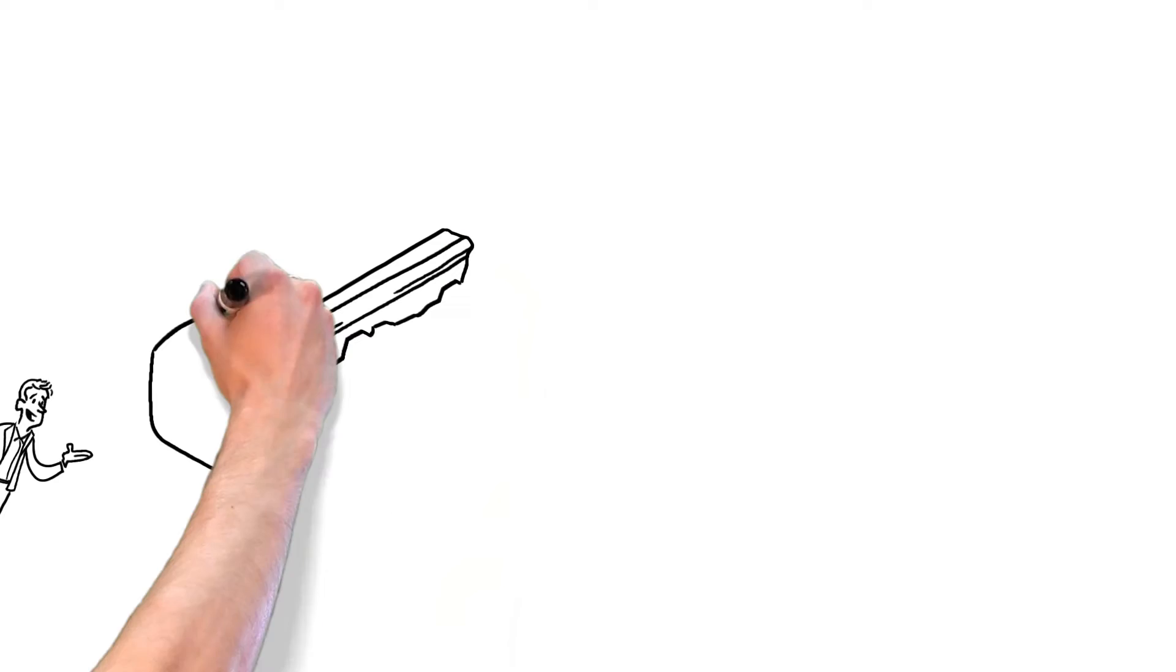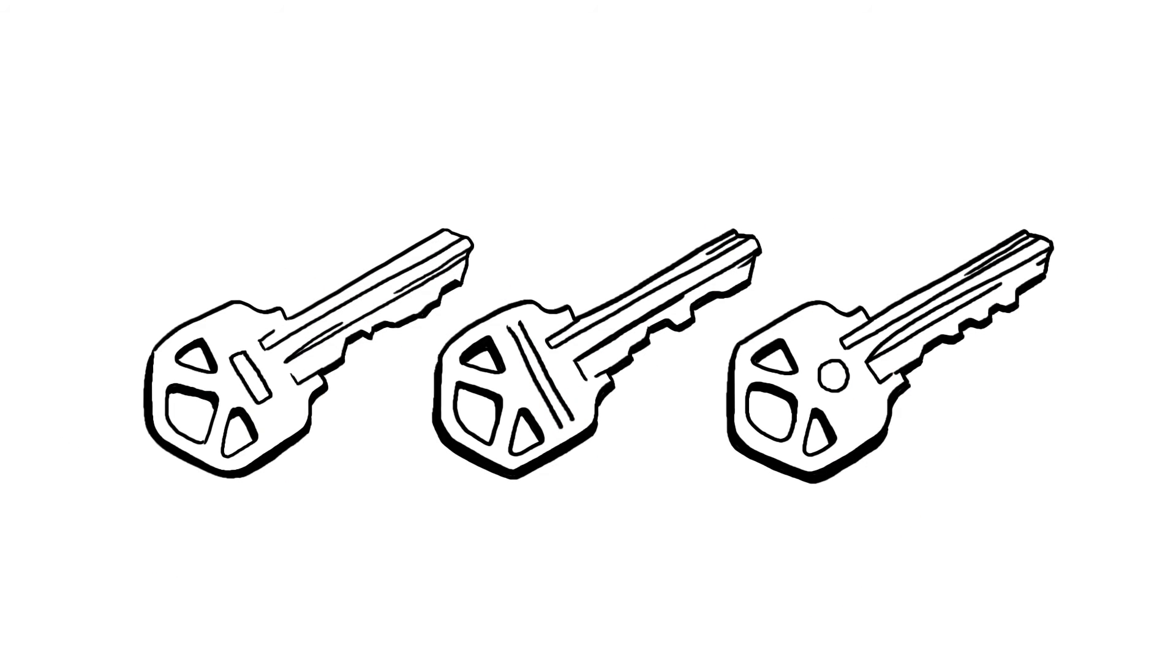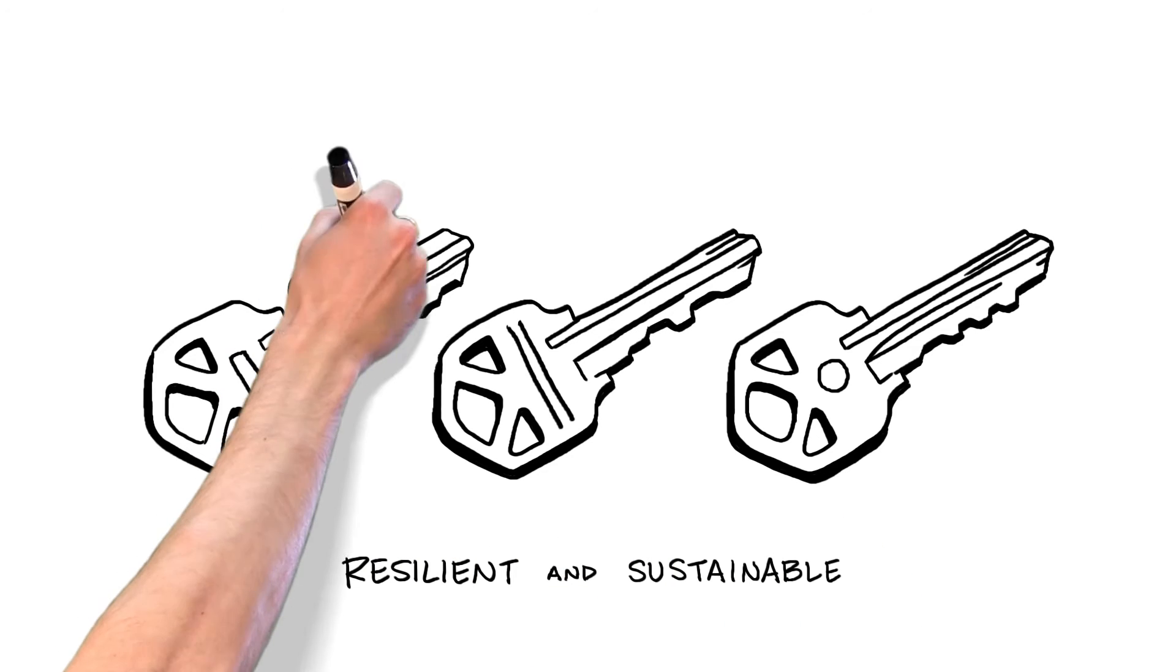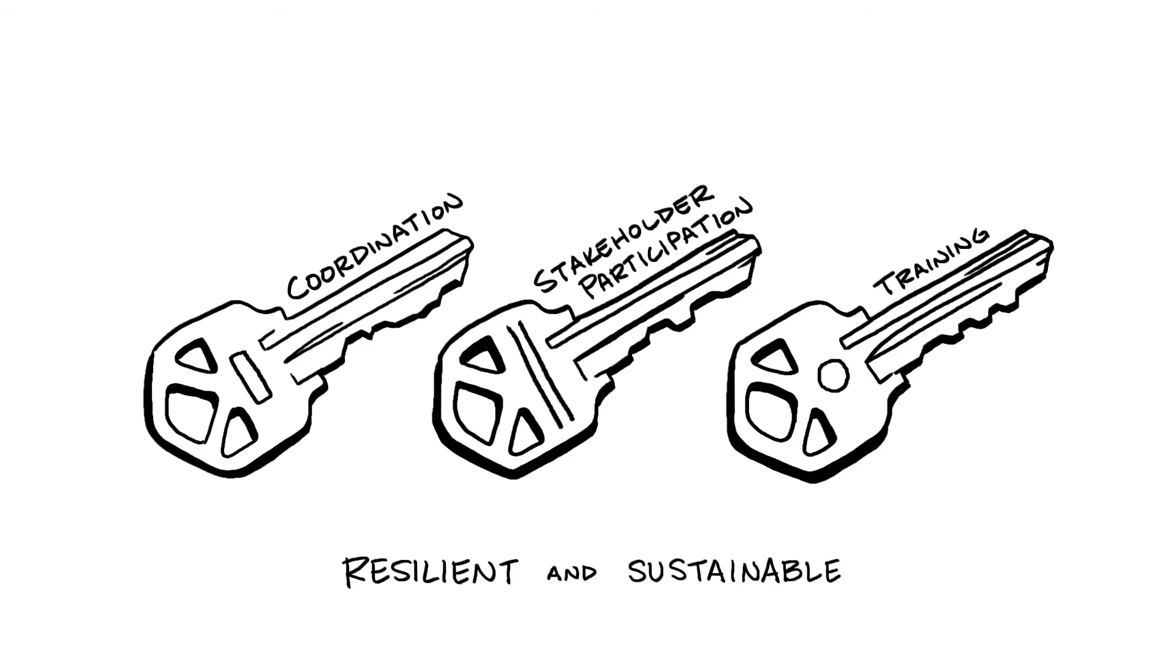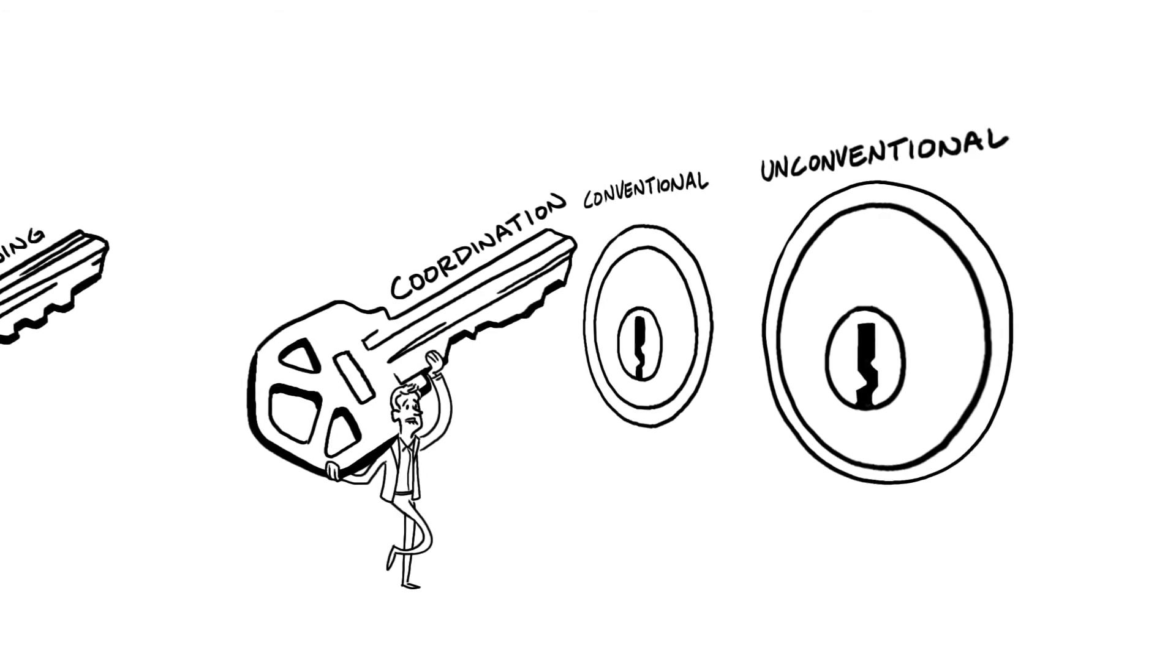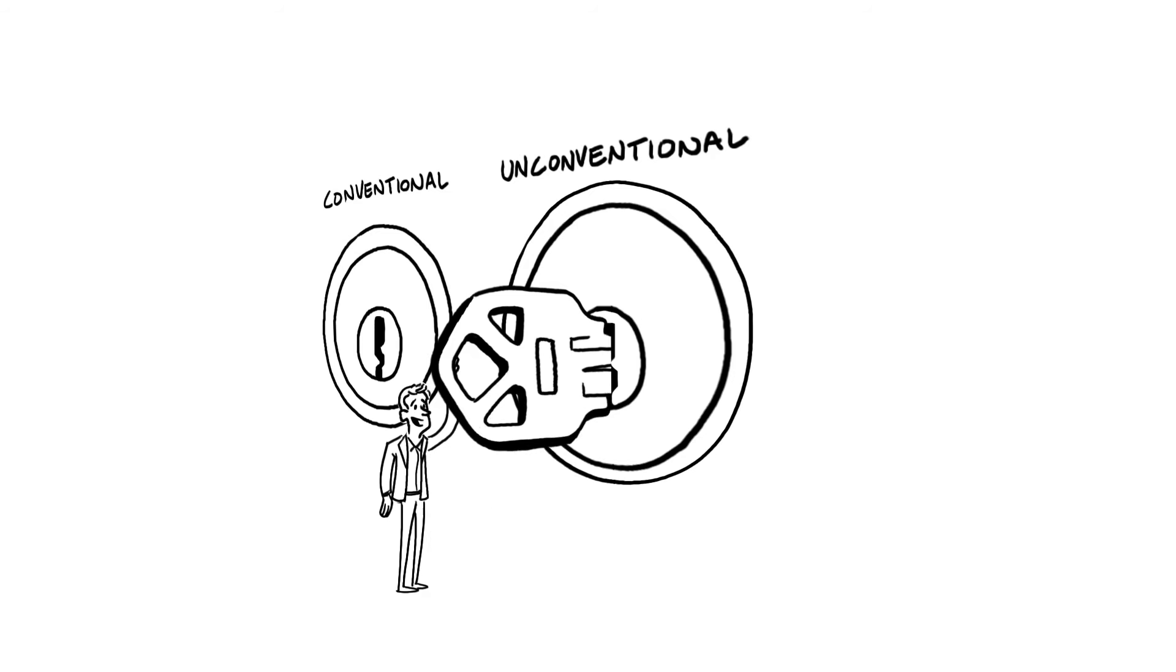Thankfully, our research also uncovered three key processes that did facilitate the rebuilding of communities that were both resilient and sustainable: coordination, stakeholder participation, and training. Now at first, these may seem like common sense. But what we found is that successful projects did them in unconventional ways.